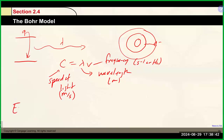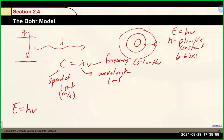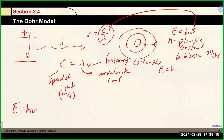We also saw we could calculate the energy for a photon of light using E = hν, where h is Planck's constant, which is 6.63 × 10⁻³⁴ joule·seconds. We can also relate both equations by solving for frequency as c divided by the wavelength and inserting it into the energy equation, giving us E = hc/λ.